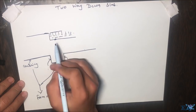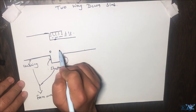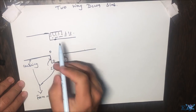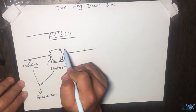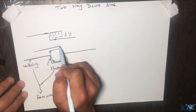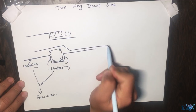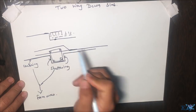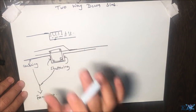In a normal slab, we have rebars in the beam — suppose four bars — along with stirrups. For the slab itself, we have a straight bar here and a cranked bar, and it goes across like this. This is how the reinforcement of a normal slab is arranged.